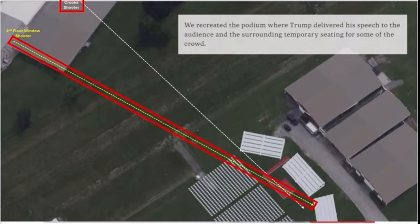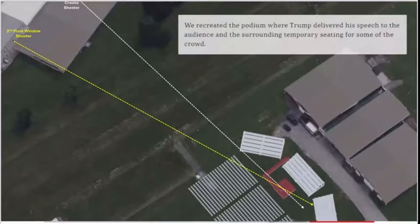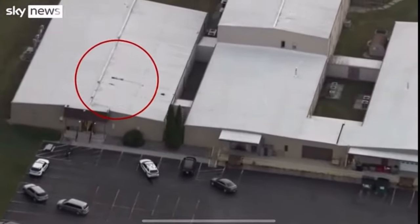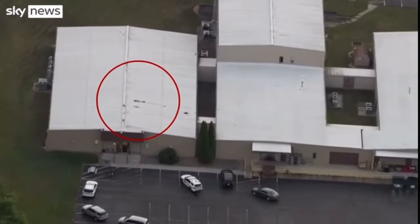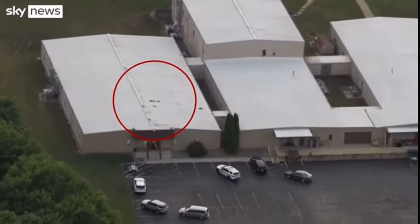The next slide shows that his body is indeed to the far right. On slide number six, I have the white line and the yellow line. The white line represents the calculated trajectory from Crooks's shooting position, which is where his dead body was. As I drew the line to the left, I discovered from a Sky News helicopter video that there's a second floor window that perfectly lines up with that trajectory.